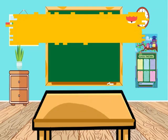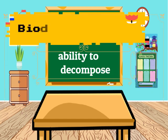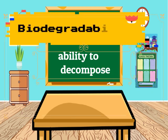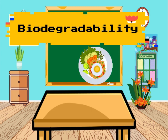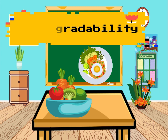Biodegradability is the ability of a material to decompose. Examples are fruits, vegetables, food, plants, animals, and humans.